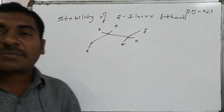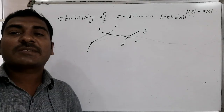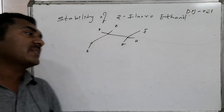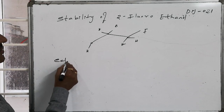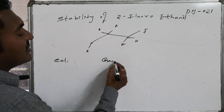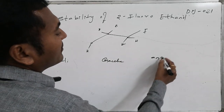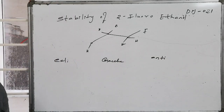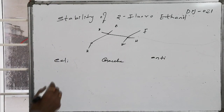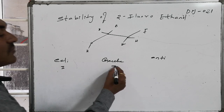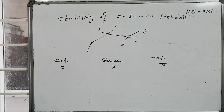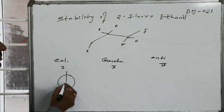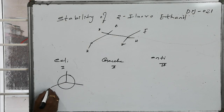2-fluoroethanol has major conformations: eclipsed conformation, gauche conformation, followed by anti-conformation. Out of these conformations, if I claim them as 1, 2, and 3, then the stability order of these conformations needs to be determined.